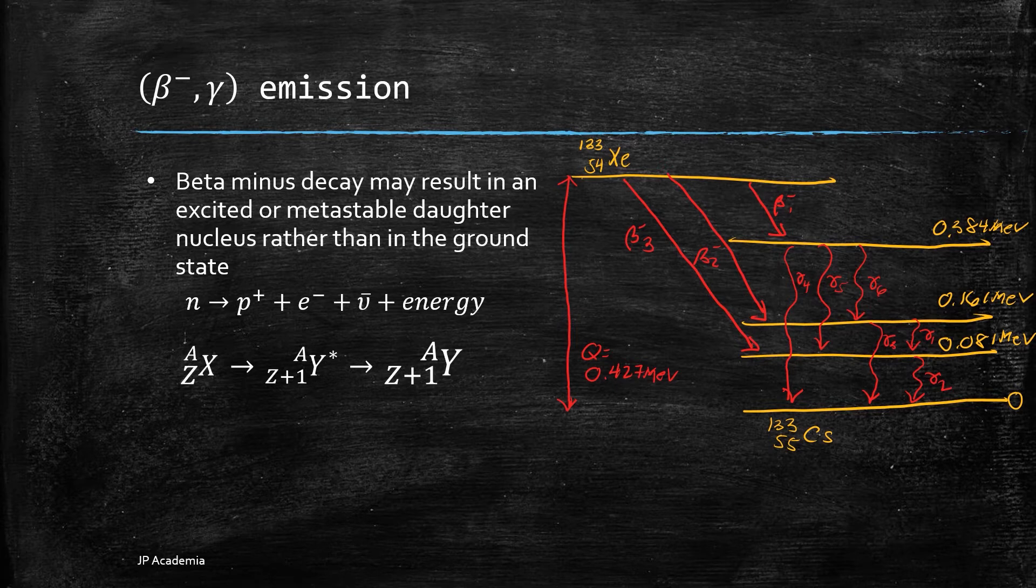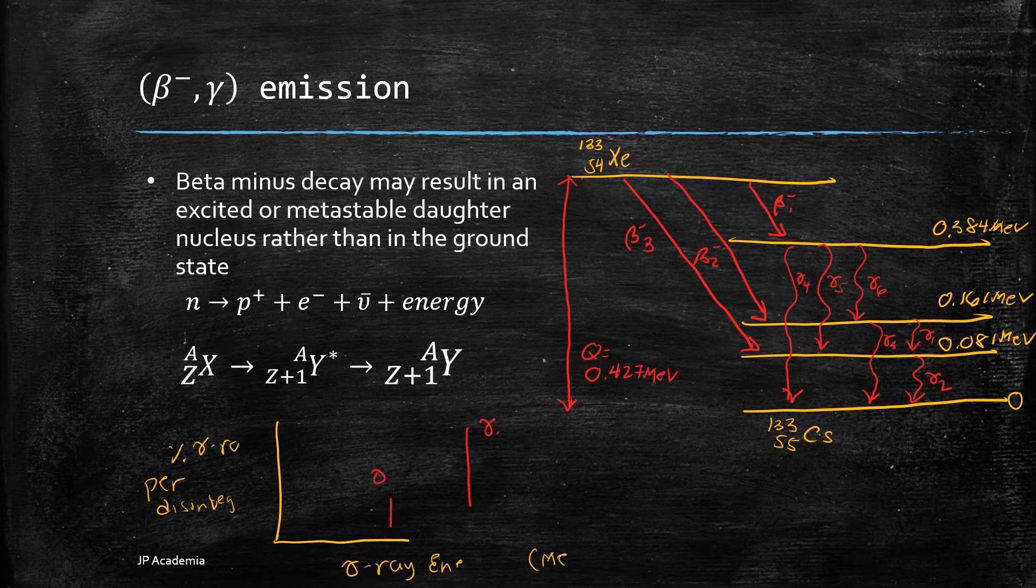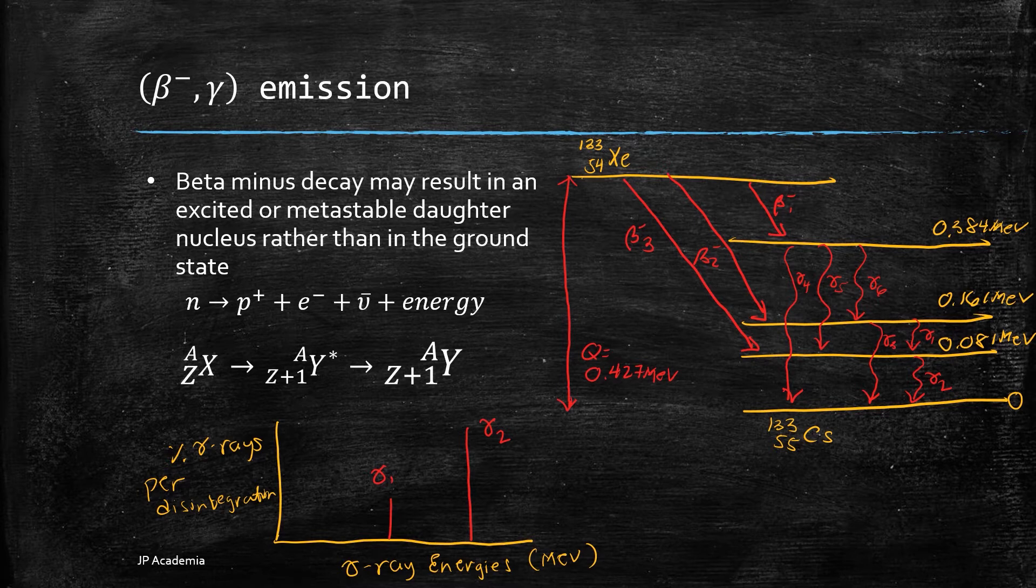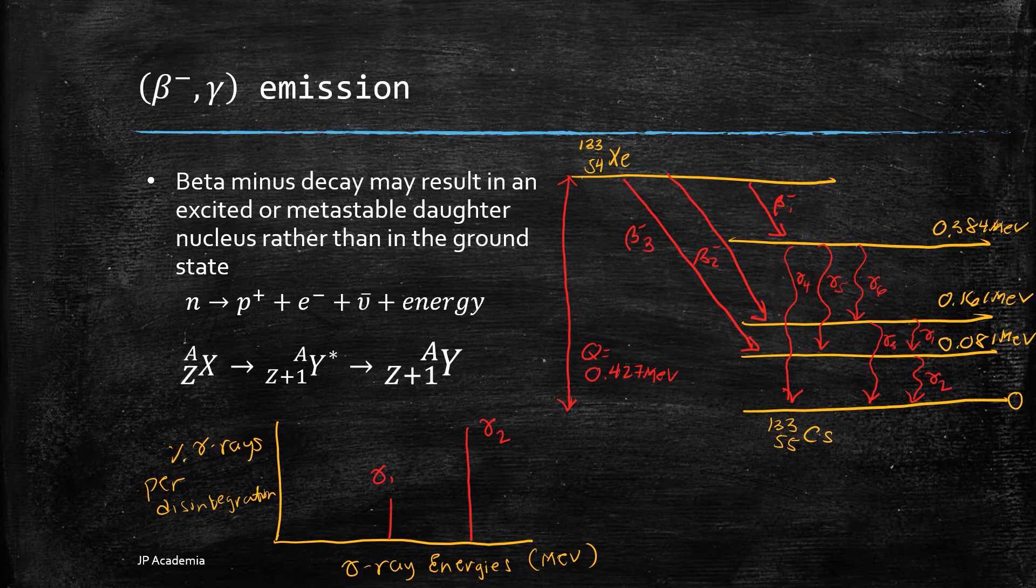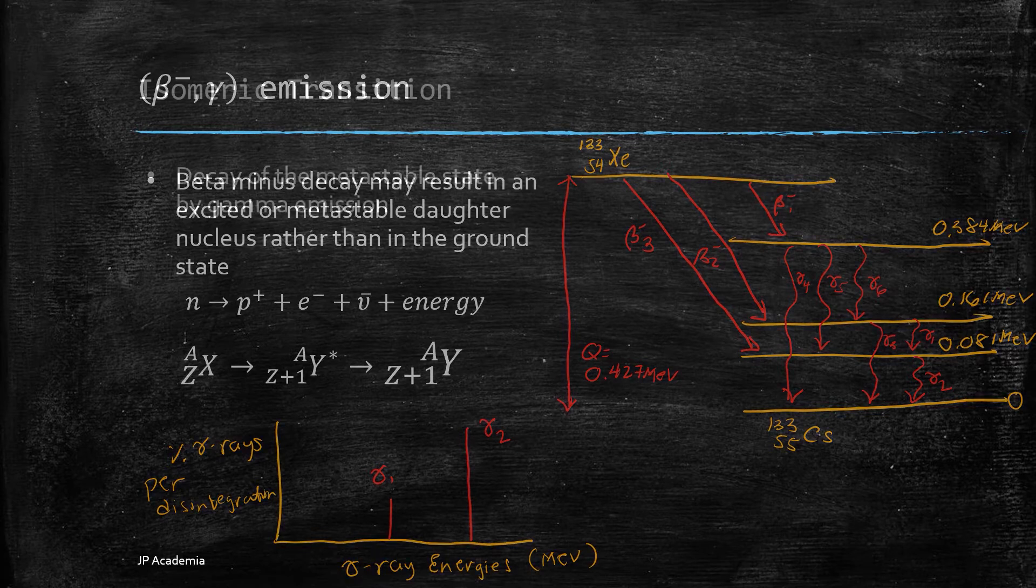If beta minus particle has a continuous distribution of energies, gamma rays, which are characteristic of that specific radionuclide, have this discrete spectrum shown here. These gamma rays can be easily measured because they are highly penetrating.